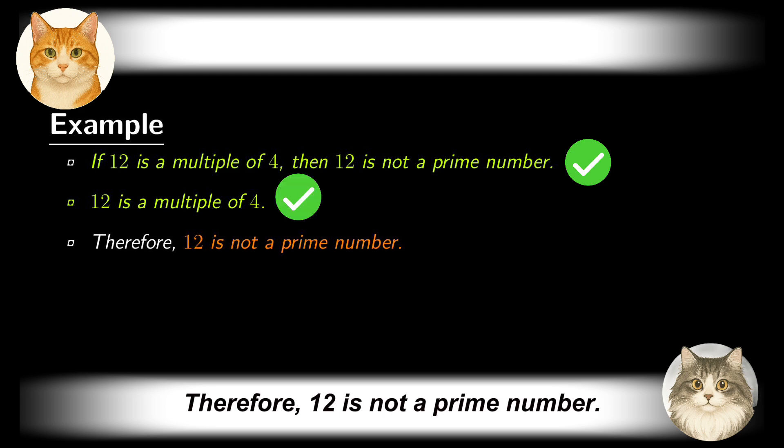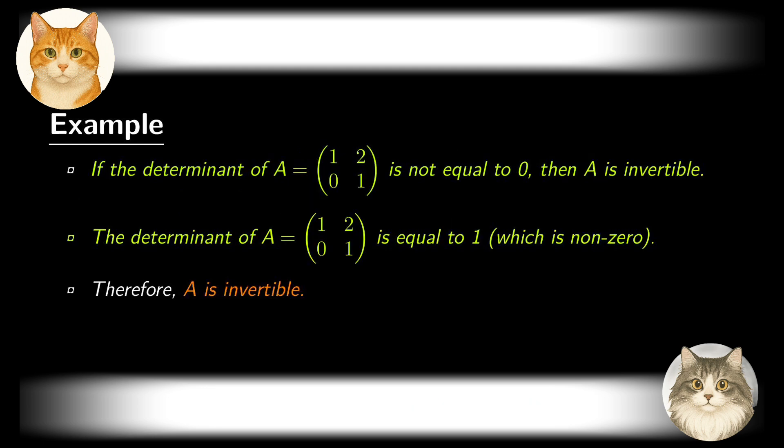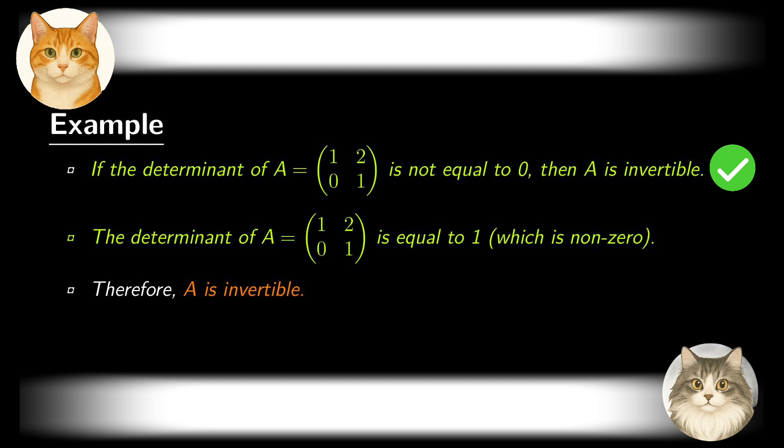If the determinant of the matrix A (1, 2, 0, 1) is not equal to 0, then A is invertible. The determinant of the matrix A is equal to 1, which is non-zero. Therefore, A is invertible.